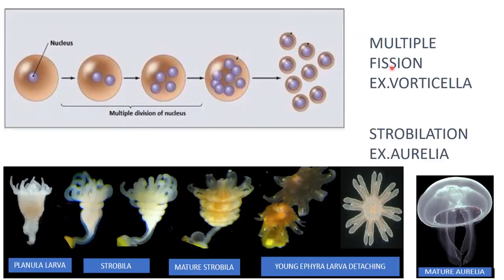In multiple fission, the parent body divides into many small daughter individuals. The nucleus first divides without division of the cytoplasm, and then each nucleus is surrounded by a cytoplasmic portion, and each one becomes an individual. This type of multiple fission is seen in vorticella.